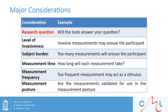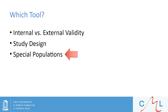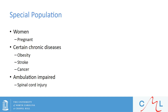The research question is the most important consideration. Pulse wave velocity measurements in a seated posture may not capture exactly what we want — which is arterial stiffness. Let's also briefly discuss appropriate tool selection for special populations, depending on who we are going to recruit. Examples of special populations include women — particularly pregnant women — certain chronic disease populations such as obesity, spinal cord injury, cancer, populations where ambulation is impaired, and others.